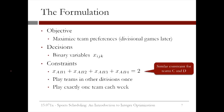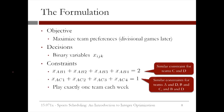Our next constraint is that each team should play the teams in the other division once. So teams A and C should play each other once in the four weeks. This is modeled with the constraint: XAC1 + XAC2 + XAC3 + XAC4 = 1. This is similar to the previous constraint, except only one decision variable will have value 1. We'll have similar constraints for teams A and D, teams B and C, and teams B and D.